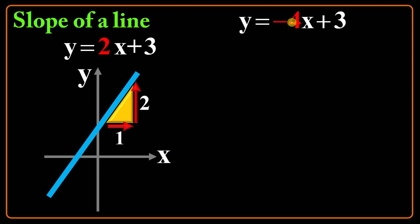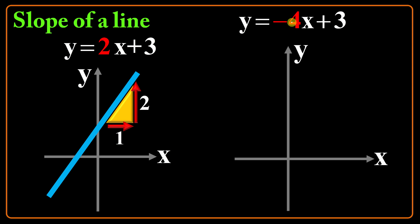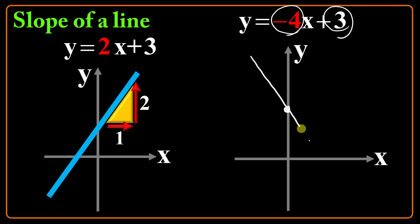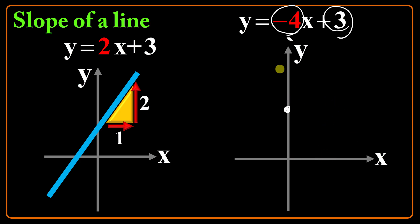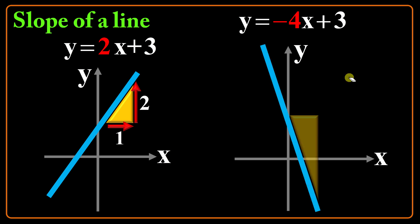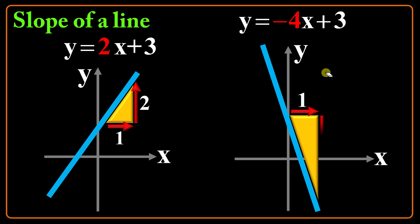The line is given to be y equals negative 4x plus 3. How should I draw it? The 3 is the vertical intercept. But as it is negative 4, the line is descending. As I go to the right, in the positive direction of x, I should go downwards because the slope is negative. I can draw the line with a negative slope. If I establish a triangle here, going one step forward means going four steps downward, because the slope is negative 4. Is the slope different at any other point on this line? No — the slope of a line is constant. Everywhere on the line, the slope keeps the same ratio.